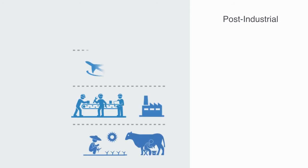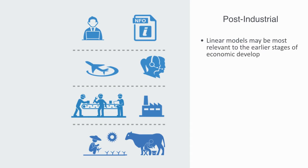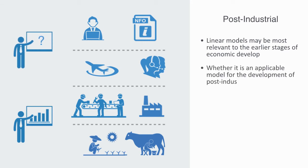This centralized model is of course in its basic structure a simple linear model to economic development, and linear models work best in simple environments, meaning it may be relevant to the early stages of economic development. That is to say when the economy is going through agrarianization and industrialization, but whether it is an applicable model for the development of post-industrial information and knowledge economies is an open question.